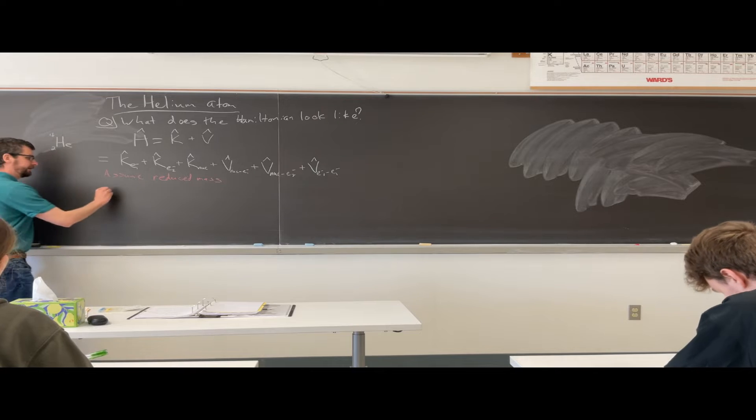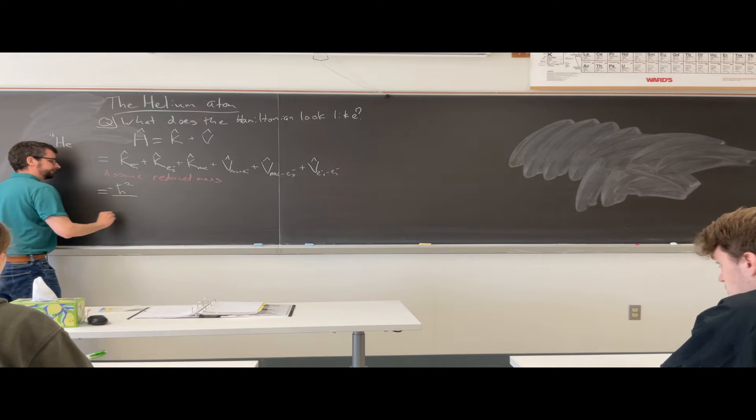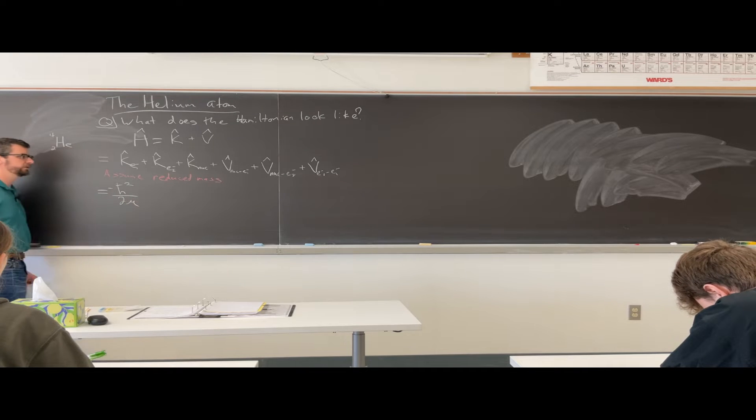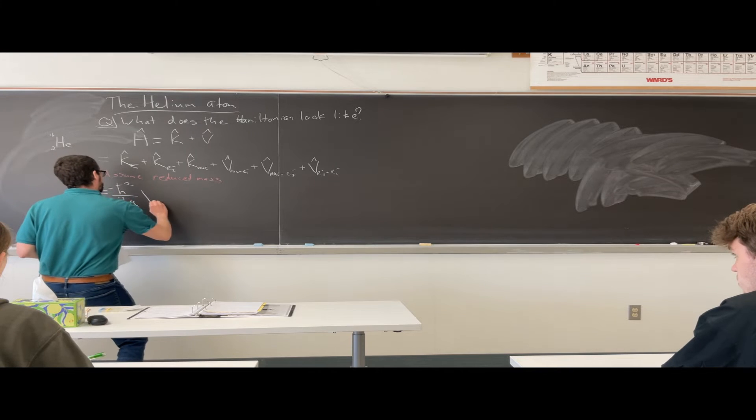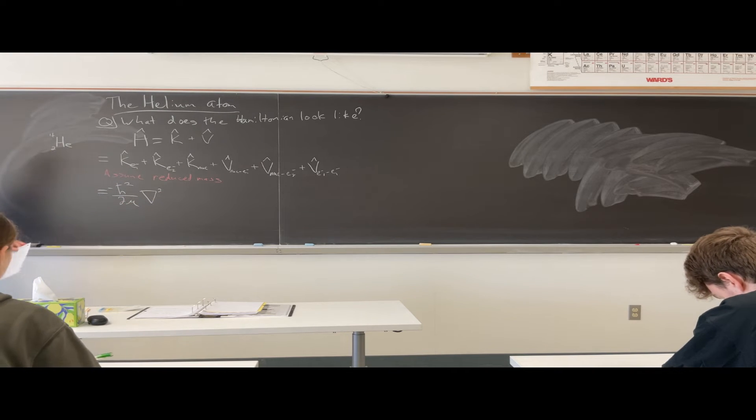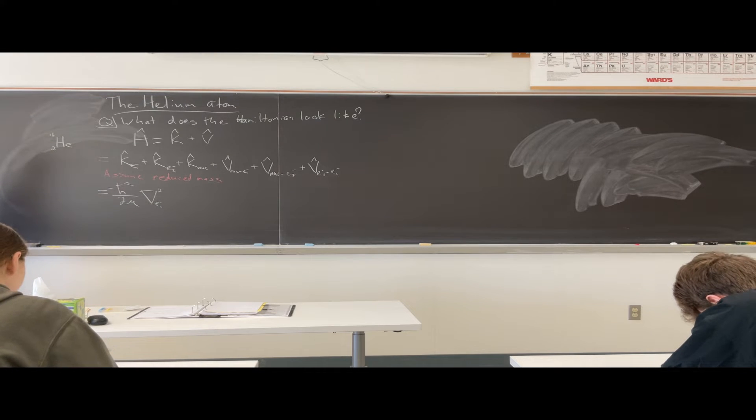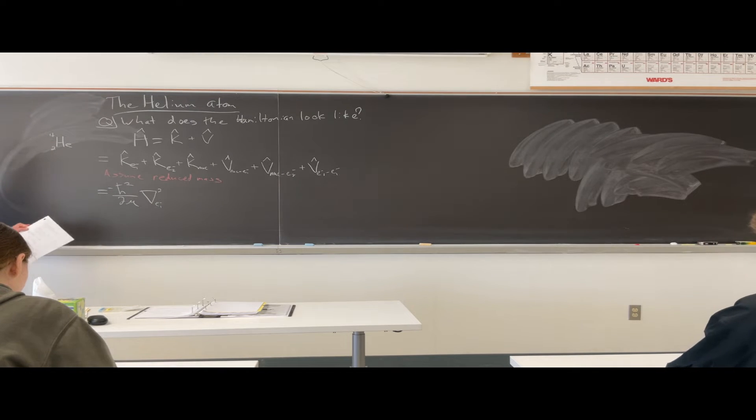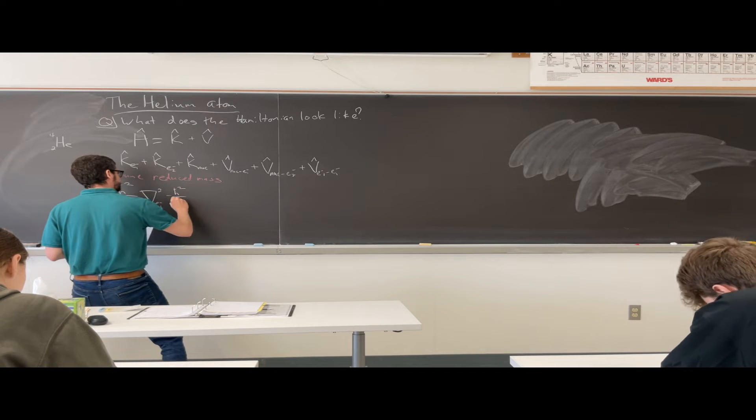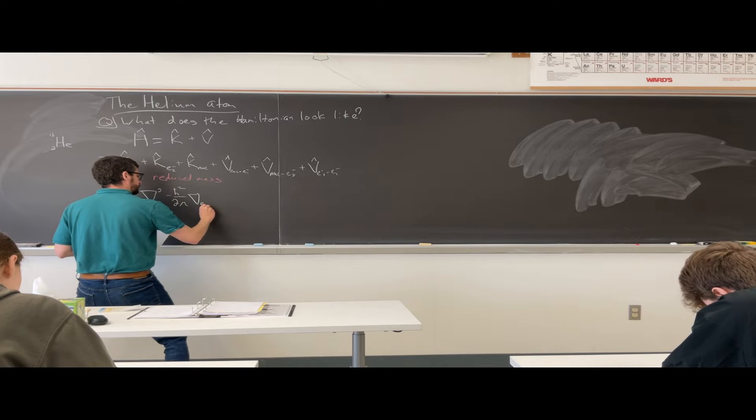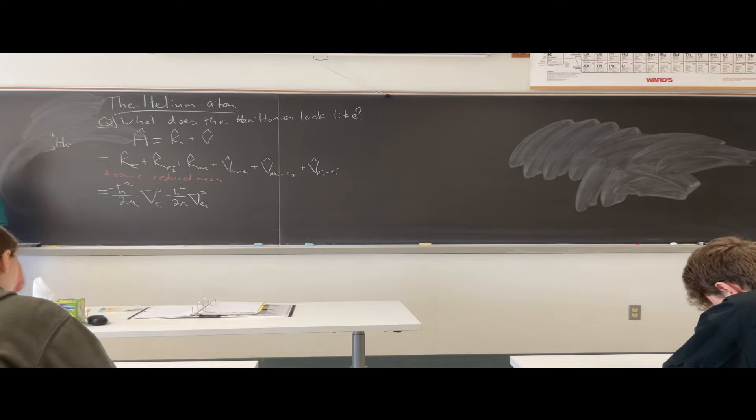Kinetic energy operator, it's always negative h-bar squared over 2 mu. And then what are we going to need there? We need those second derivatives. We use the gradient symbol. And then we've got to specify this is for electron number one. Then what should we do for electron number two? The exact same thing, except we go electron number two.